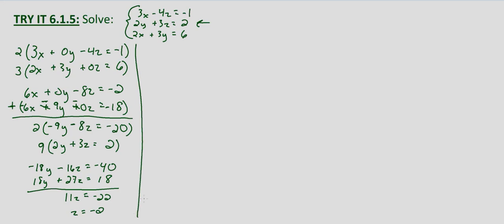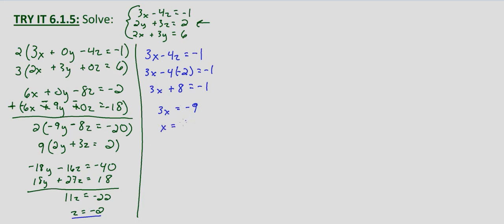So z equals negative 2. Now we'll substitute this into one of our equations that only involves x and z to find x. We'll use 3x minus 4z equals negative 1. Substituting z equals negative 2: 3x minus 4 times negative 2 equals negative 1. That gives us 3x plus 8 equals negative 1. Subtract 8 from both sides: 3x equals negative 9. Divide both sides by 3 and we get x equals negative 3.